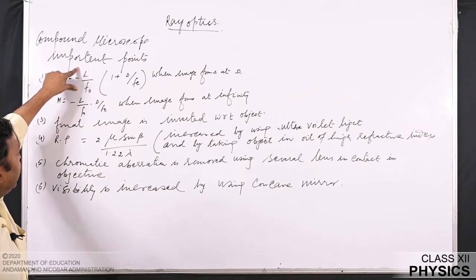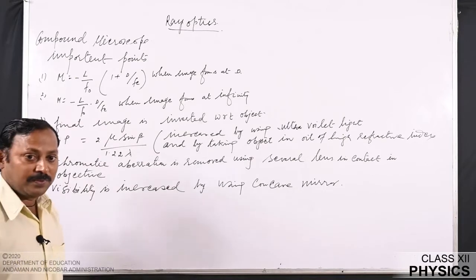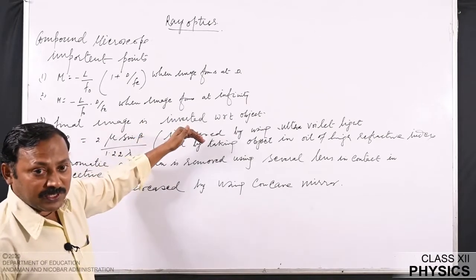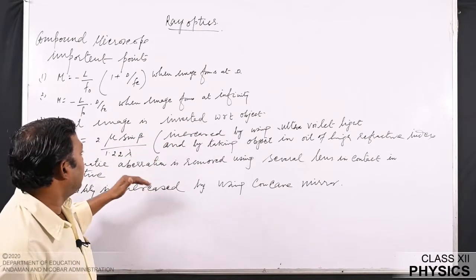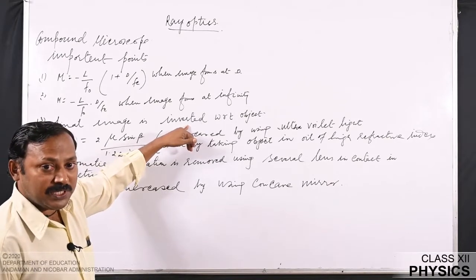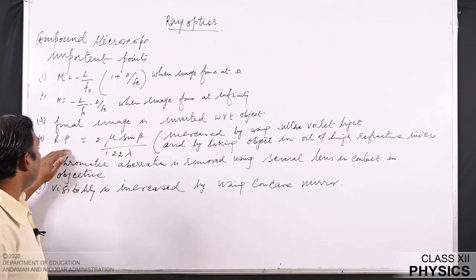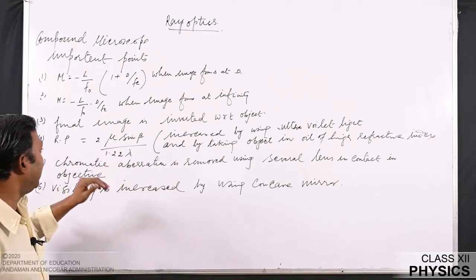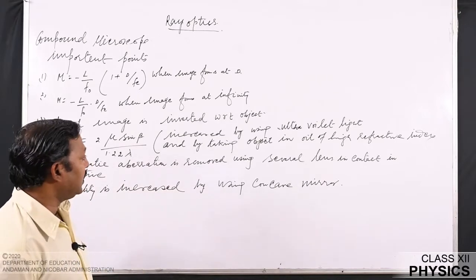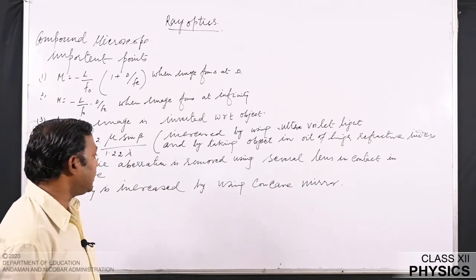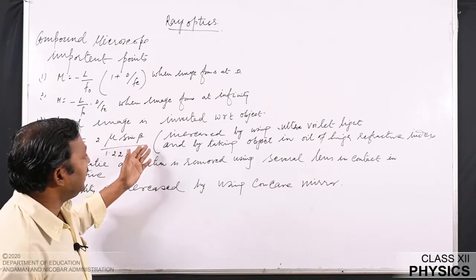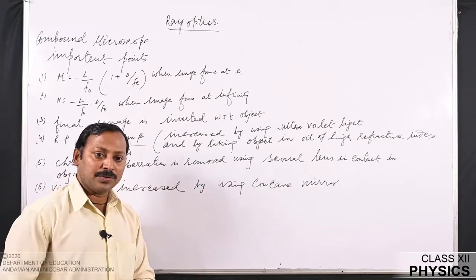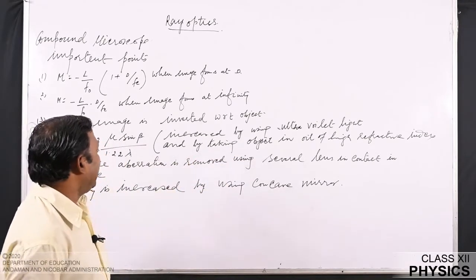The negative sign indicates that the final image formed is inverted with respect to the object. The resolving power of a compound microscope is given by Rp = 2μ sinβ / 1.22λ. Resolving power is the ability of the optical device to show two nearest objects as separately as possible.